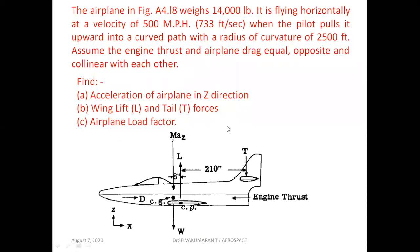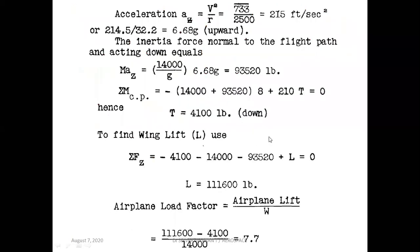The next problem: an airplane weighing 14,000 pounds is flying horizontally at 500 miles per hour when the pilot pulls it upward in a curved path with a radius of curvature of 2,500 feet. Assuming engine thrust and drag are equal, opposite, and collinear, find the acceleration in the Z direction, wing lift, tail forces, and airplane load factor. The centripetal acceleration is V²/R; V is 733 feet per second, R is 2,500 feet, giving an acceleration of 215 feet per second squared.